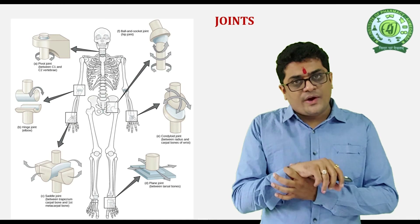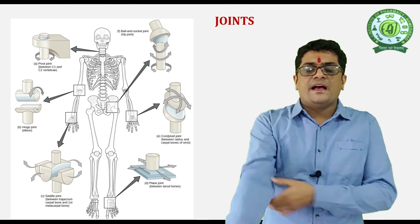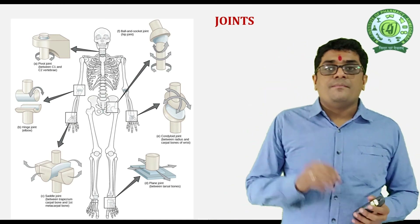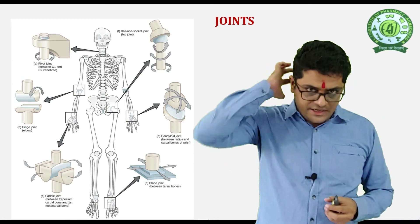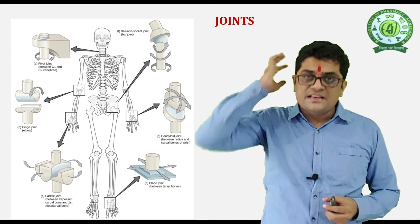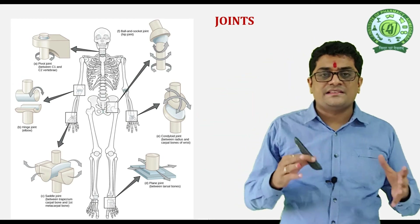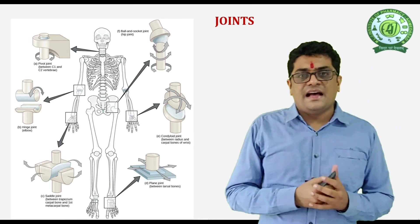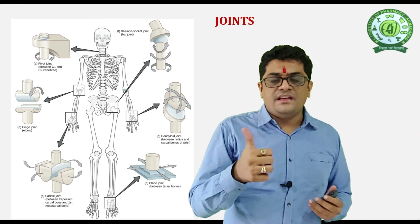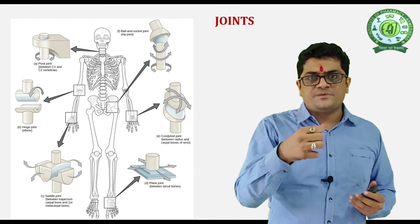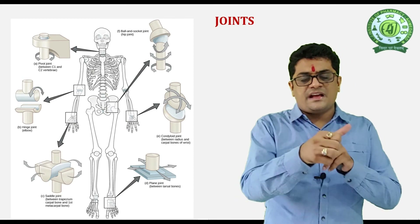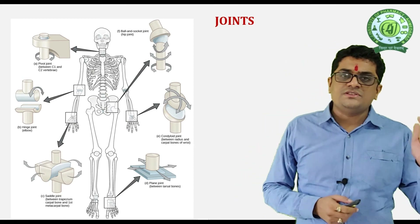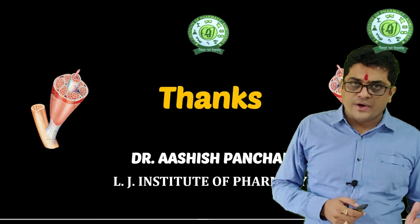The hinge joint is present in the elbow and knee joints. The pivot joint is present between the first and second vertebrae — that is, the atlas and axis. The saddle joint is present in the carpals and metacarpals of the thumb. These are all the types of joints.